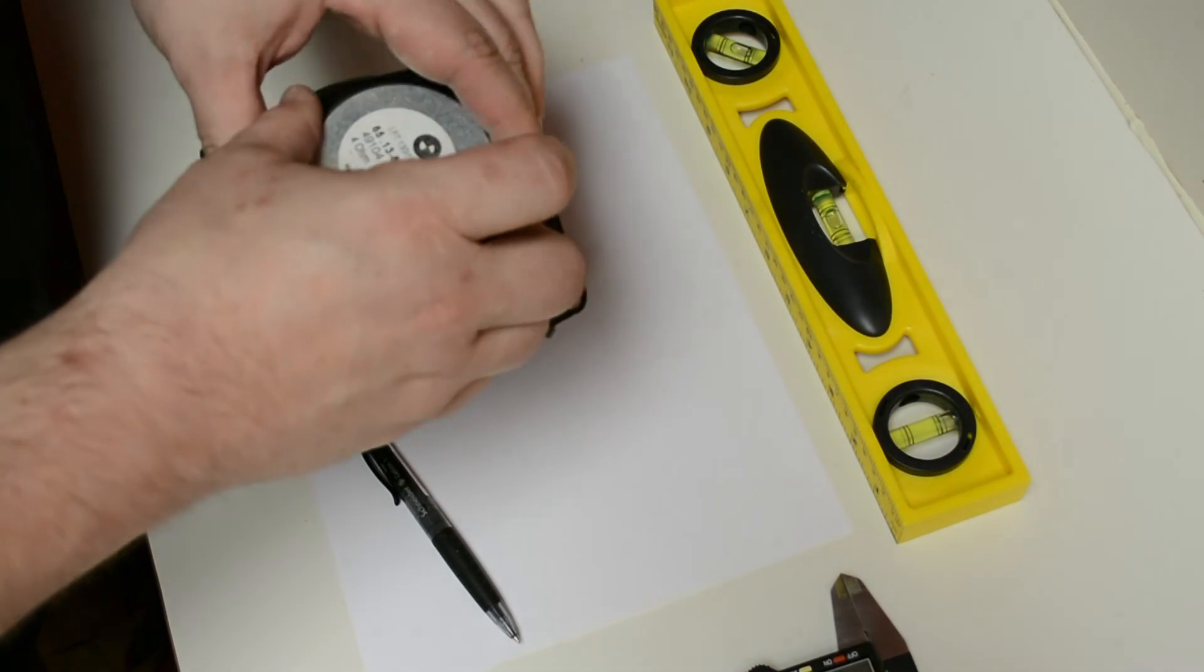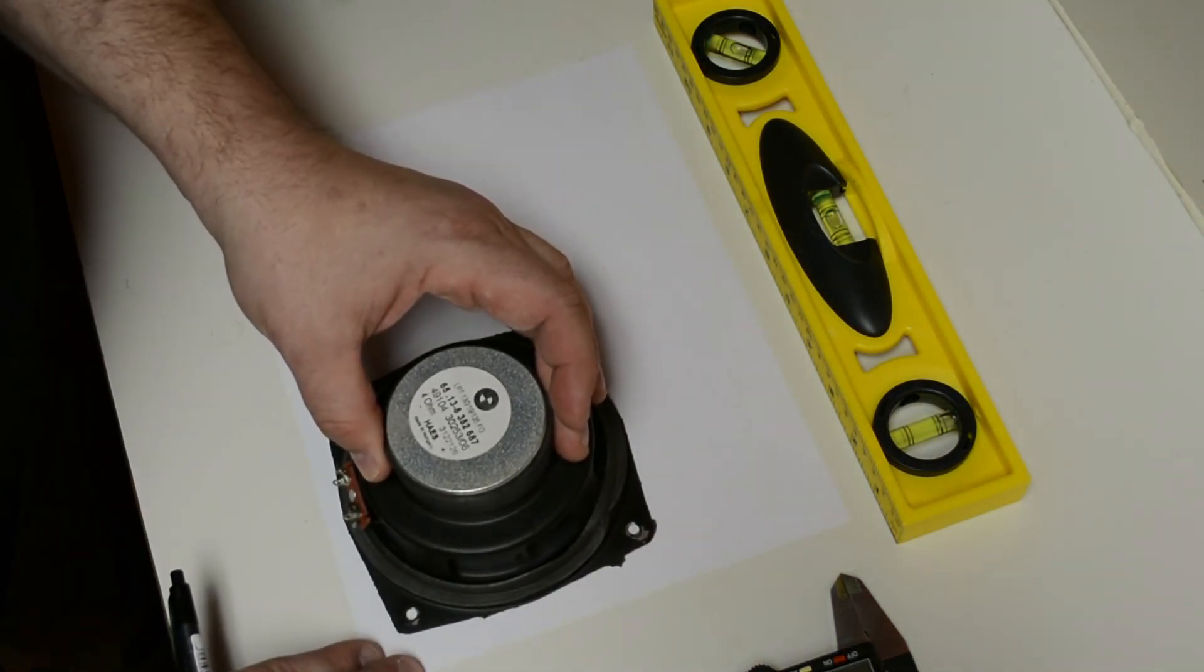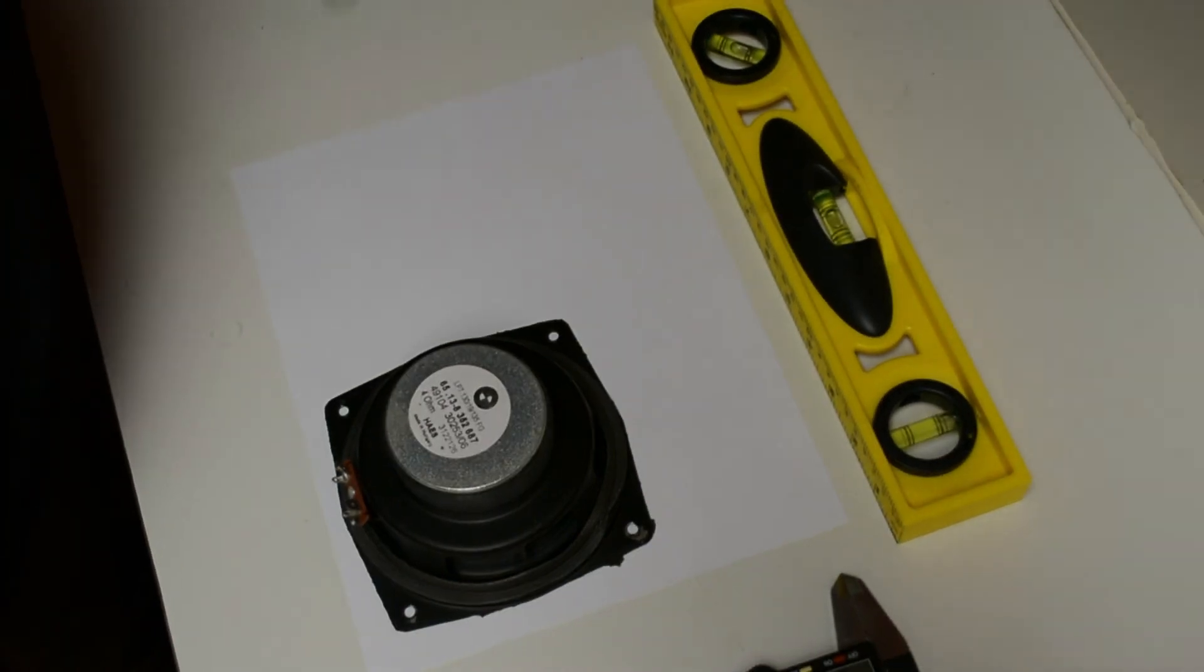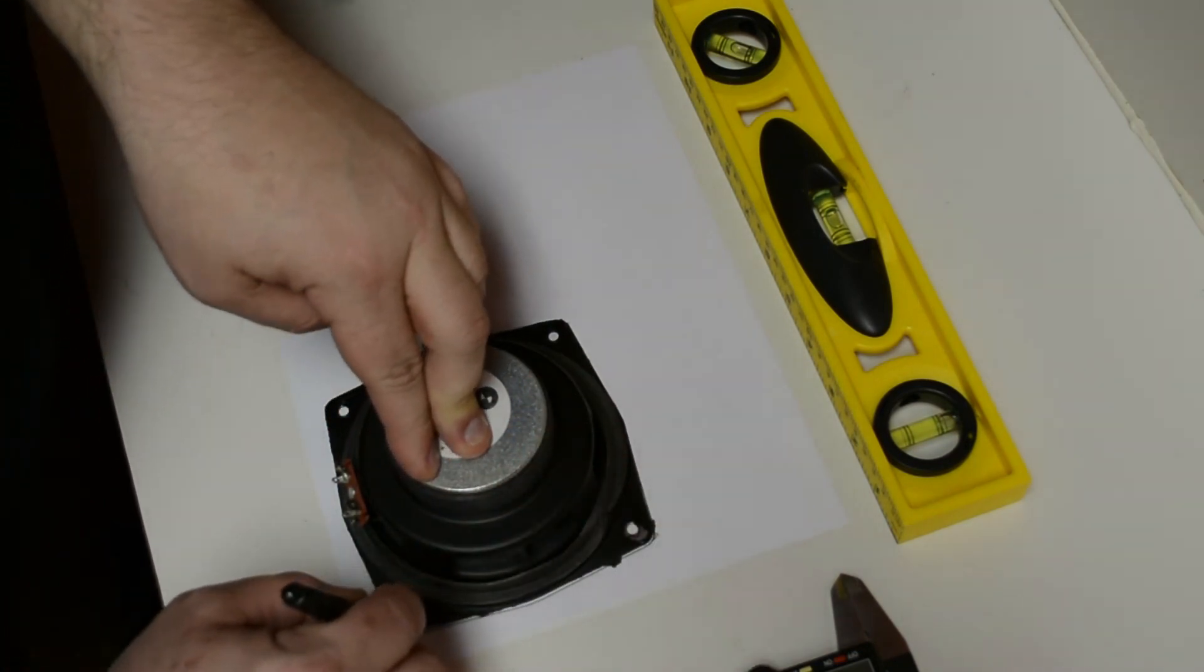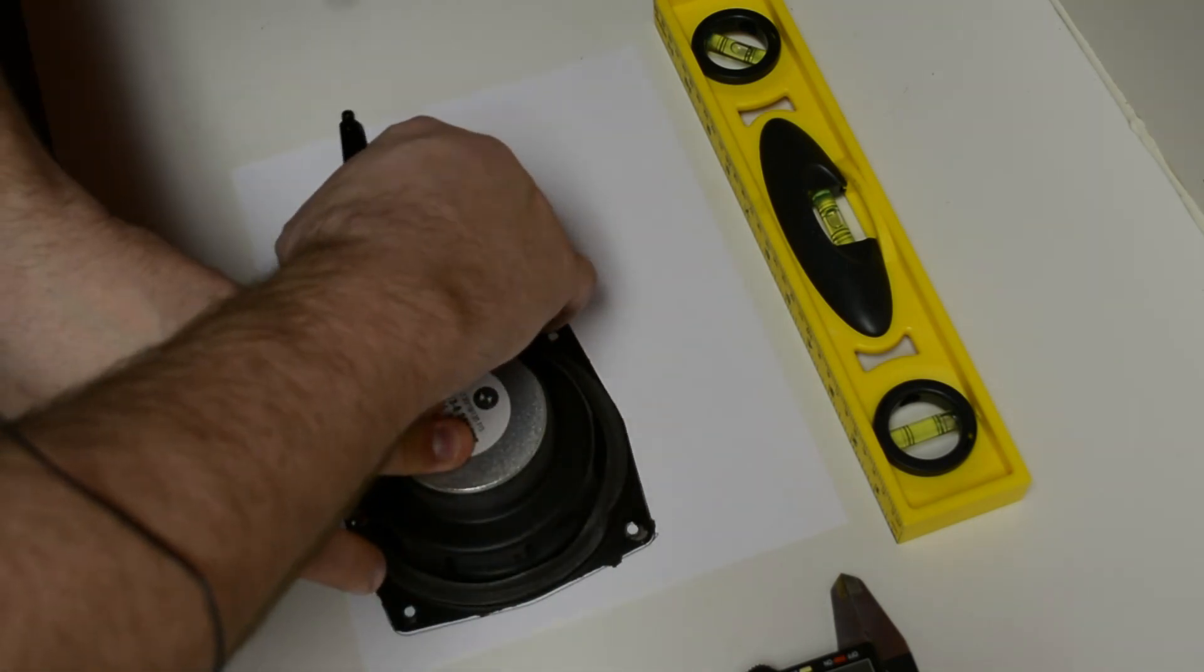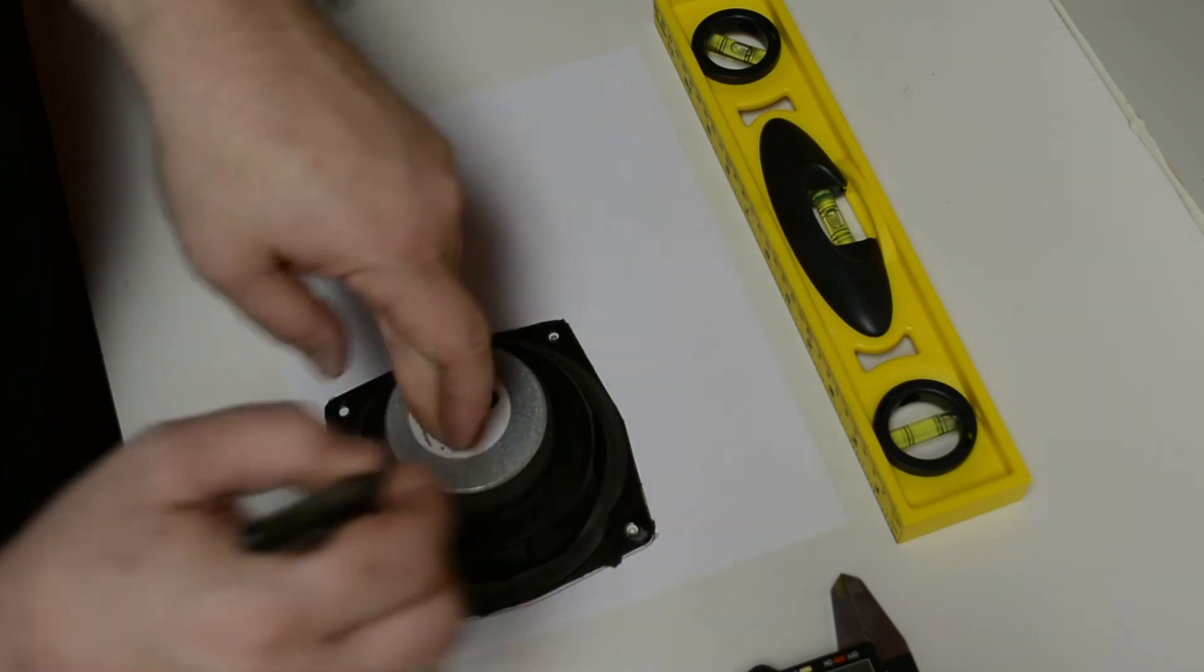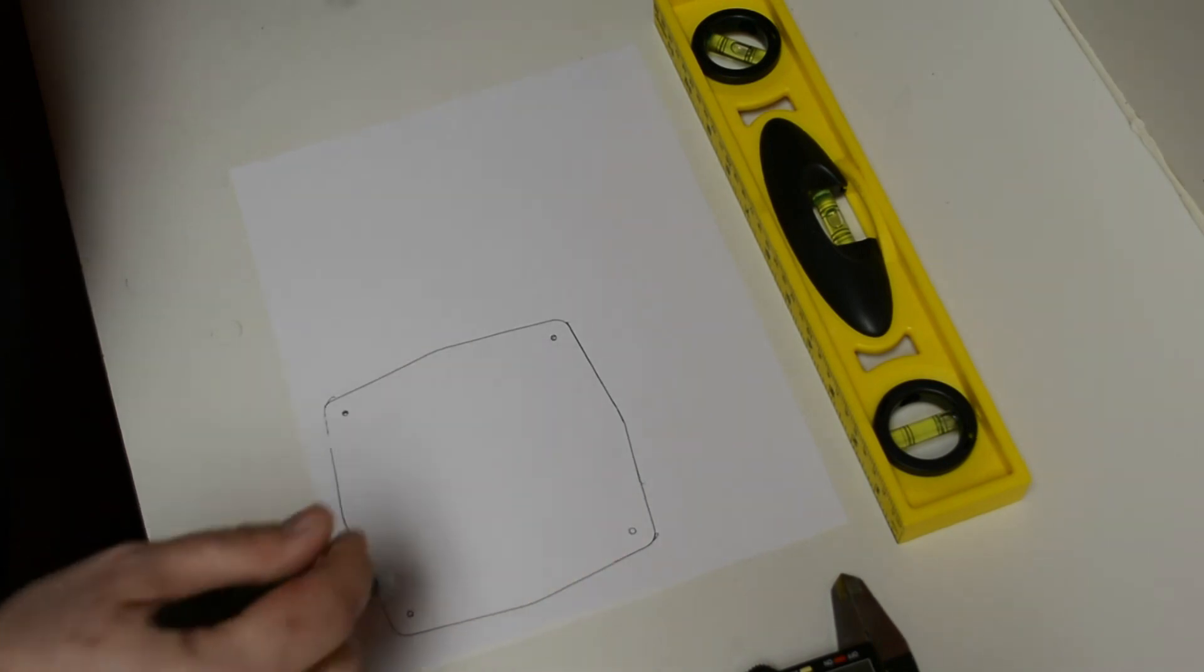We're going to start off by taking this speaker and placing it on the piece of paper, and we want to make sure that we've got it kind of square on the paper. We don't want to turn it if we can help it. We're going to take our pen and trace around the outside perimeter of this speaker. We're also going to mark off where the holes are located. Then we're going to take this speaker off, and you can see we have the outline there.